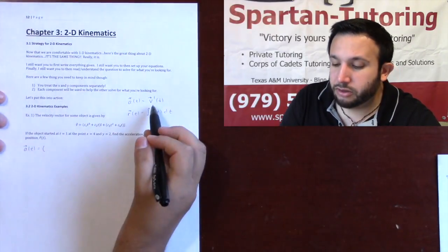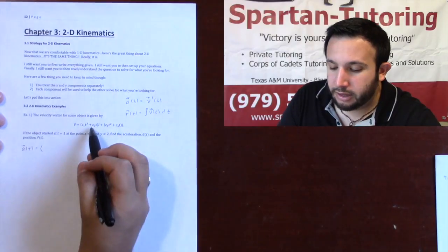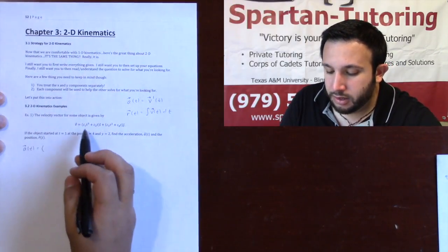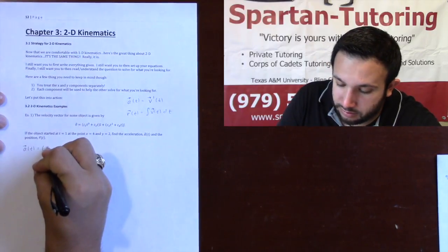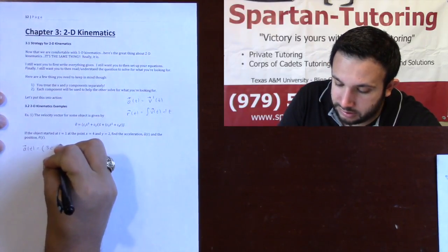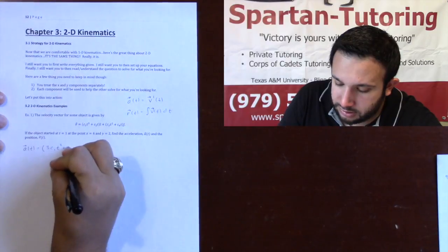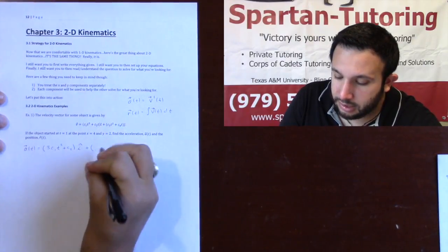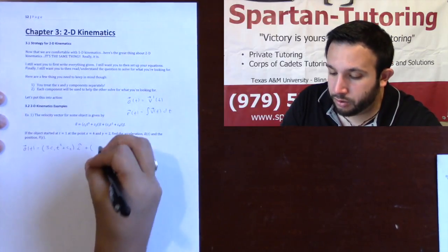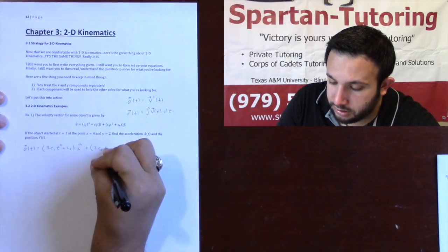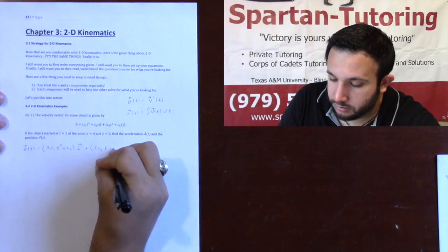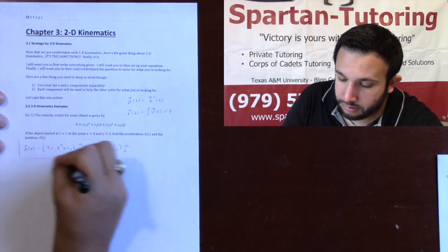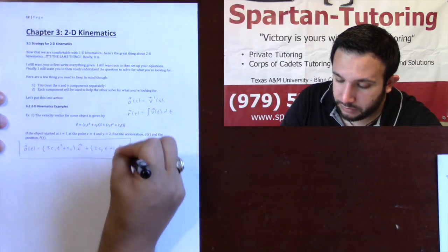Acceleration is simply the derivative of velocity, and so I'm going to take the derivative of the x term and the derivative of the y term. So the derivative of my x term is going to be 3c1 t squared plus c2 i, and then the y component, taking the derivative of that is 2c3 t plus c4. That is your acceleration.